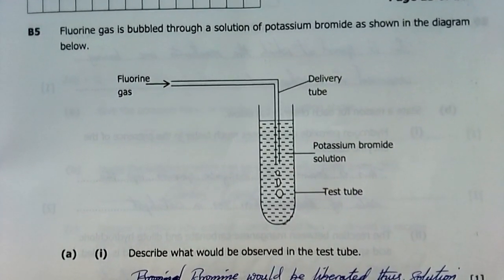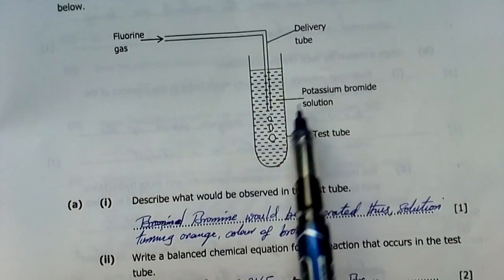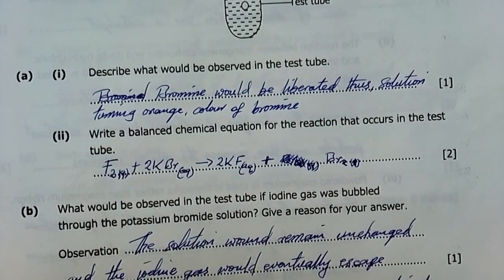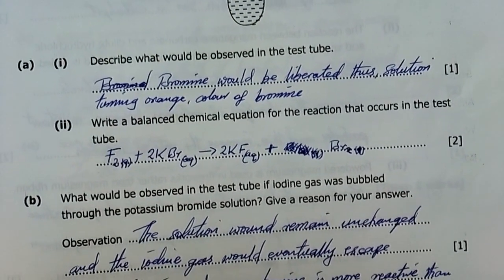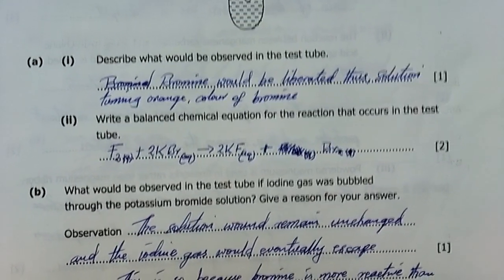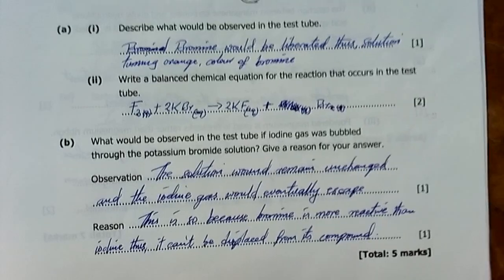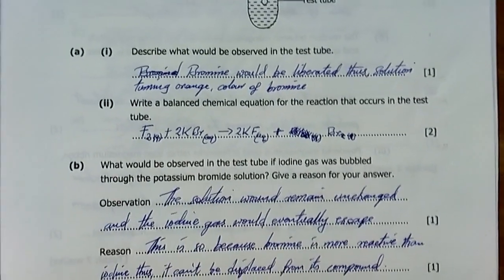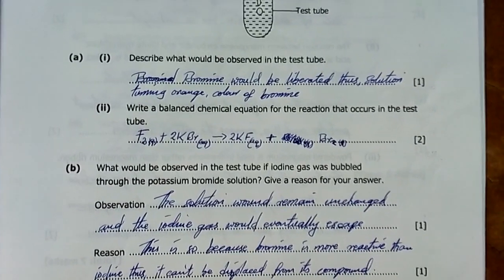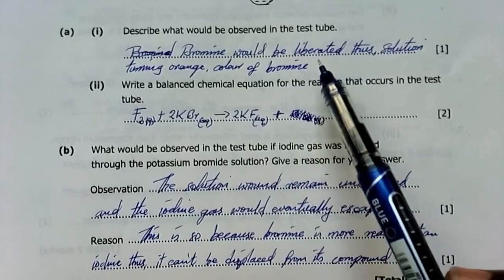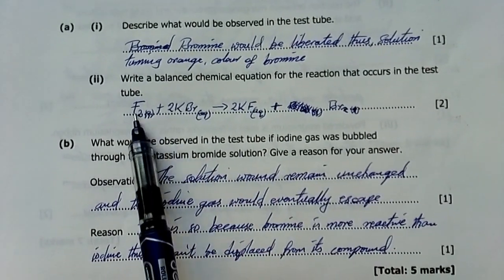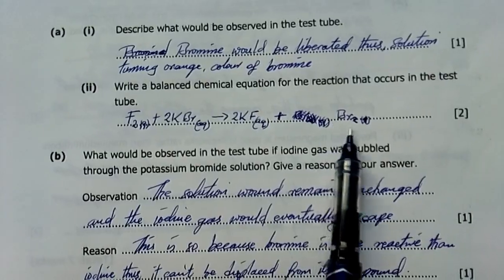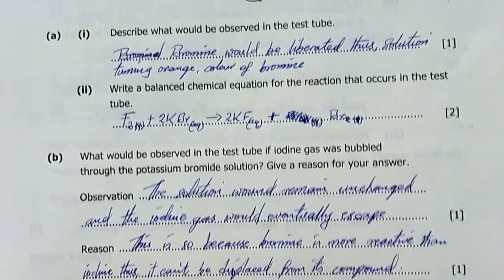Fluorine gas is bubbled through a solution of potassium bromide. Describe what would be observed in the test tube. Bromine would be liberated, the solution turning orange, color of bromine. Therefore, the solution would turn orange because fluorine is more reactive than bromine. It's the most reactive non-metal single element. Therefore, it can displace bromine from its compounds. Reactive metals are hard to displace from their compounds; they form stable compounds. Less reactive elements can be easily displaced. Write a balanced chemical equation: F₂ + 2KBr → 2KF + Br₂ liquid.